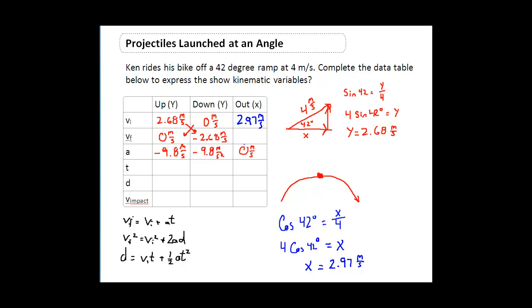So my x component is 2.97 meters per second. Because there's 0 acceleration, it's also going to be my final velocity as well. So what I've gotten here is that my upwards velocity when I start off is 2.68, and my horizontal velocity when I start off is going to be 2.97 meters per second. That takes care of my initial and my final velocities for both x and y.